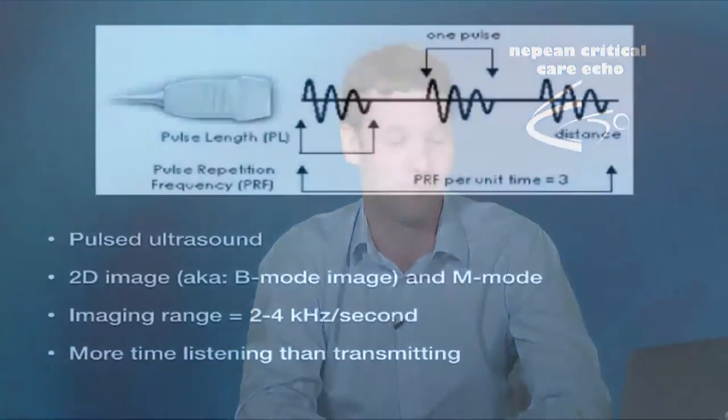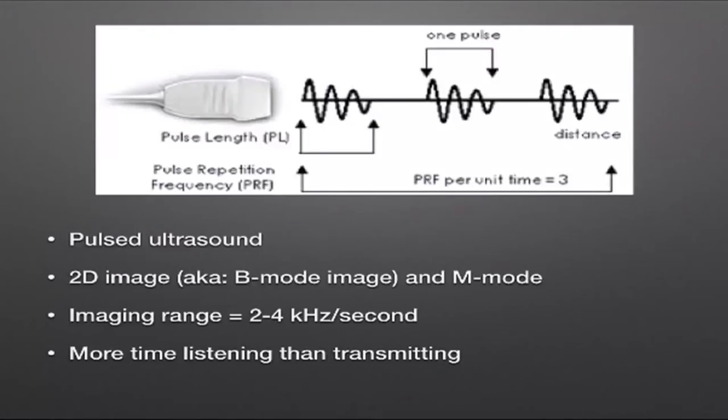The pulse is typically between 2 to 4 wavelengths long, and you can figure out the total pulse length by multiplying the wavelength by the number of cycles in that pulse. We spend much more time listening for ultrasound reflections than transmitting — described as the duty factor, which is typically between 0.1 to 1 percent. So we're spending 99 to 99.9% of the time listening for reflected sound waves.